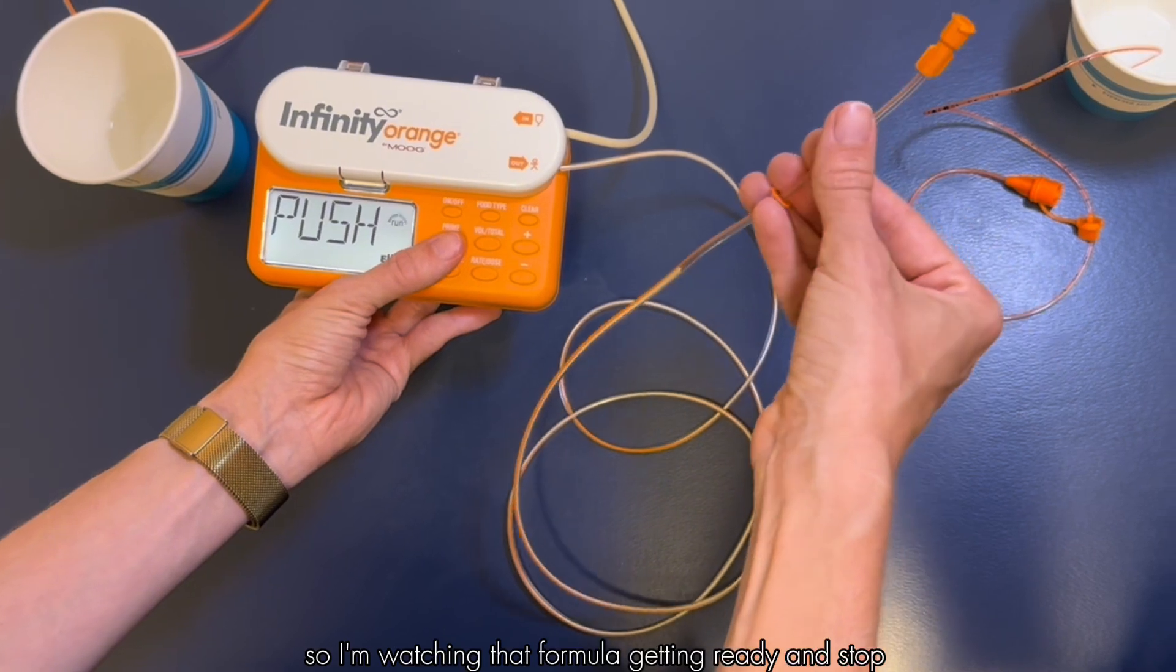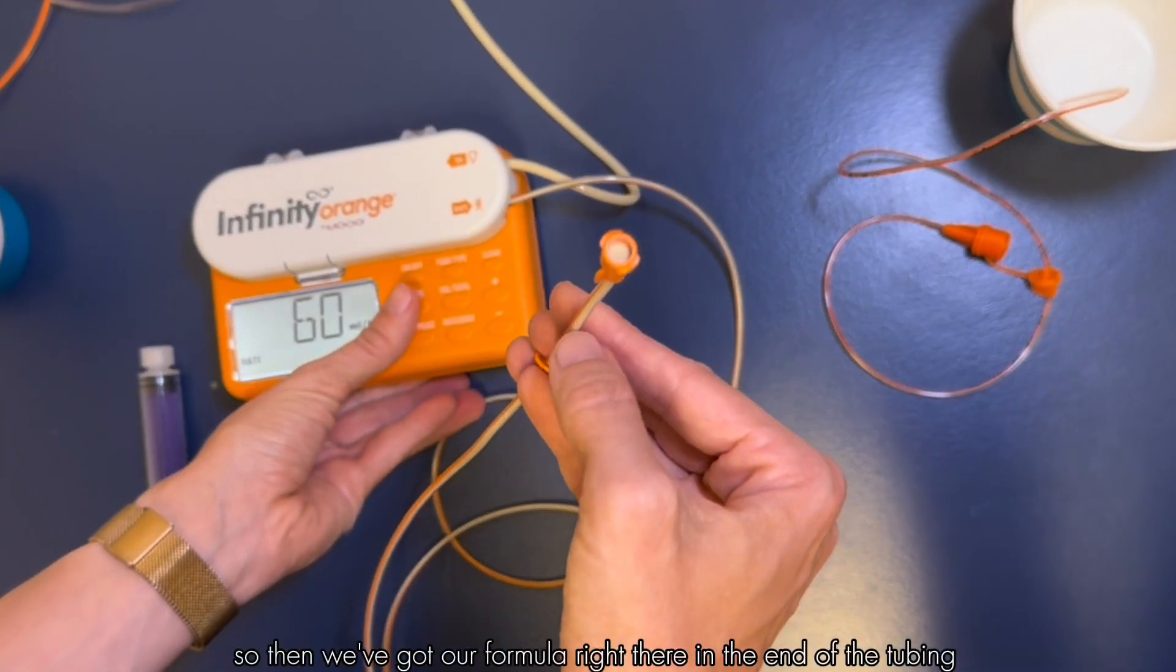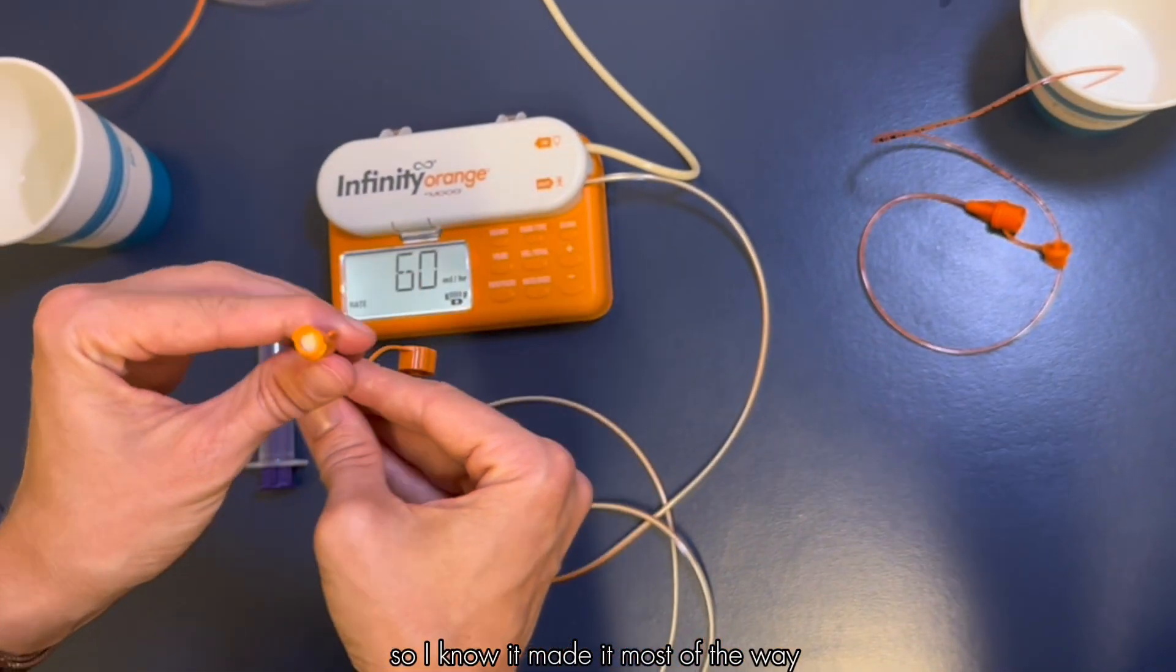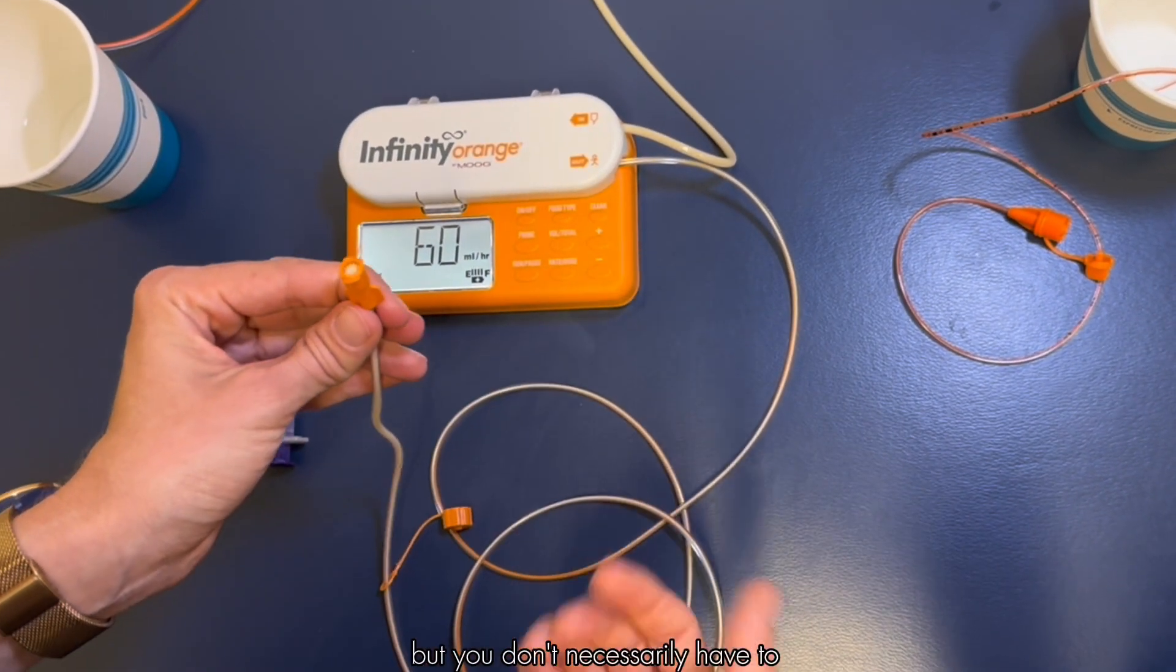I'm watching that formula getting ready and stop. So then we've got our formula right there in the end of the tubing so I know it made it most of the way. If you want to let a couple drips come out that's fine, but you don't necessarily have to.